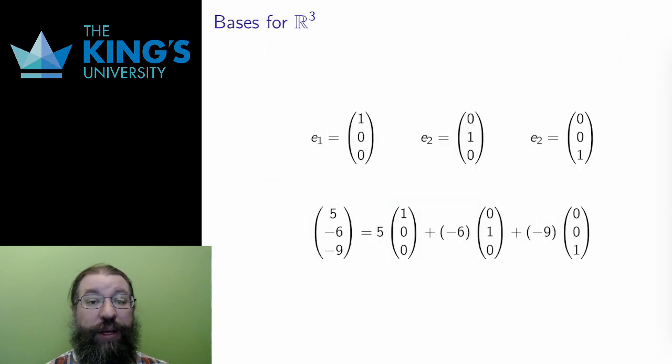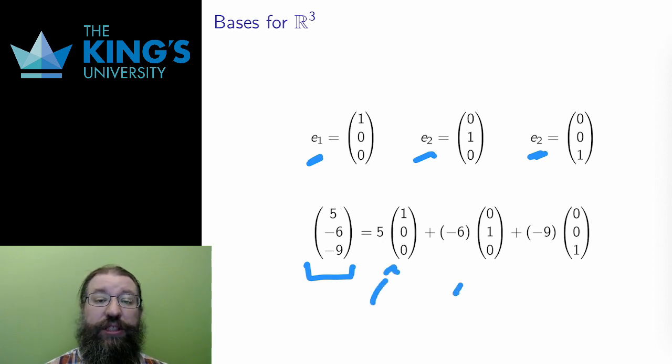There is a standard basis for ℝ³ as well, which is also the axis vectors and is also written with the notation E1, E2, and now E3. Any vector is a linear combination of these three. For example, (5,-6,-9) is 5 times E1, plus -6 times E2, plus -9 times E3. And any other vector has a similar construction where the constants are just the first, second, and third coordinates.